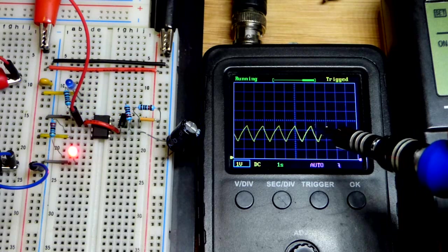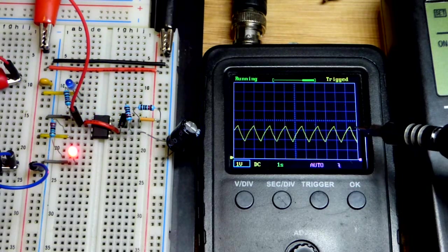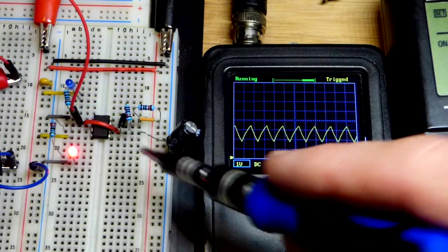The capacitor is charging to two thirds of the supply voltage while the output is high. And while it is discharging, the output is low right there.